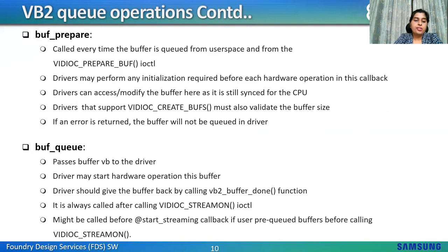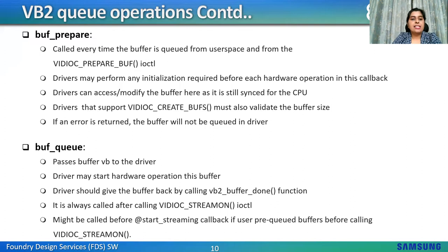buf_init: called once after allocating a buffer in mmap or after acquiring a new user-ptr buffer; the driver can perform additional buffer-related initializations, taking the VB2 buffer index and filling its data into driver context. Initialization failure prevents queue setup from completing; this callback is optional. buf_cleanup: called once before the buffer is freed; the driver can perform any additional cleanup necessary; also optional. buf_prepare: invoked from the IOCTL prepare_buf and called every time the buffer is queued from user space. The driver can perform initialization required before each hardware operation, check VB2 plane sizes against driver-calculated plane sizes, and access or modify the buffer since it's still synced with the CPU. Optional callback.